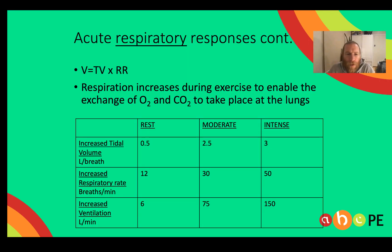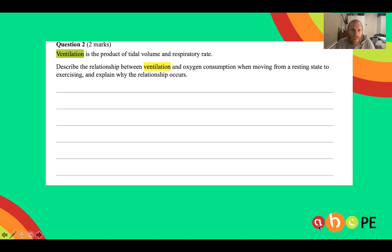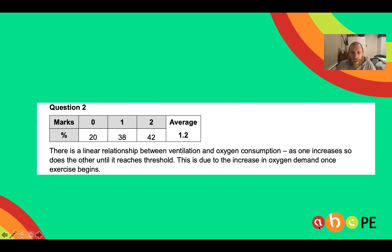Here are the key figures: the most important is the increase in ventilation from rest at 6 litres per minute up to a huge 150 litres per minute during intense exercise. Here's question 2 from the 2018 VCAA exam — it gives you the equation that ventilation is a product of tidal volume and respiratory rate, and asks you to discuss the relationship between ventilation and oxygen consumption when moving from rest to exercise. There is a linear relationship: as ventilation increases, so too does oxygen consumption, due to higher oxygen demand increasing respiratory rate, tidal volume, and ventilation.